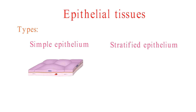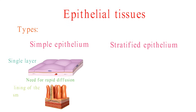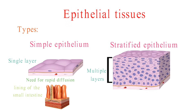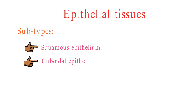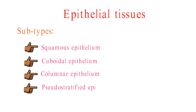Simple epithelium is made up of a single layer of cells. It is found in areas where there is a need for rapid diffusion, such as the lining of the small intestine. Stratified epithelium is made up of multiple layers of cells. It is found in areas where there is a need for protection, such as the skin. There are also several subtypes of epithelial tissue, each with its own unique characteristics and functions. Some of the most common subtypes include squamous epithelium, cuboidal epithelium, columnar epithelium, pseudostratified epithelium, and transitional epithelium.